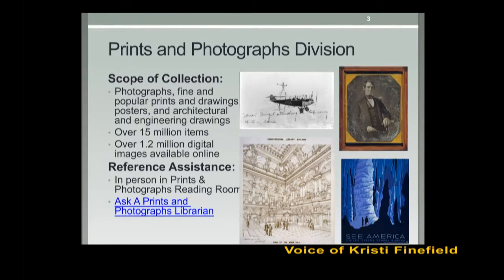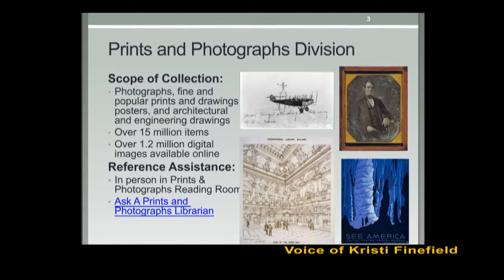The Prints and Photographs Division holds the National Picture Collection for the United States. While international in scope, the collections are particularly rich in materials either produced in the U.S., or documenting the history, lives, interests, and achievements of the American people. The 15.6 million images in the collection include photographs — by far the most common format — fine and popular prints and drawings, posters, and architectural and engineering drawings. Every year, on average, the collections grow by about 300,000 items, and we digitize about 50,000 images to add to our online catalog.